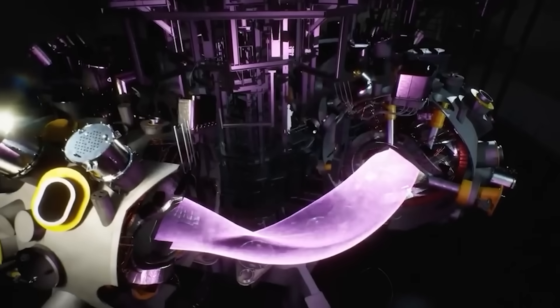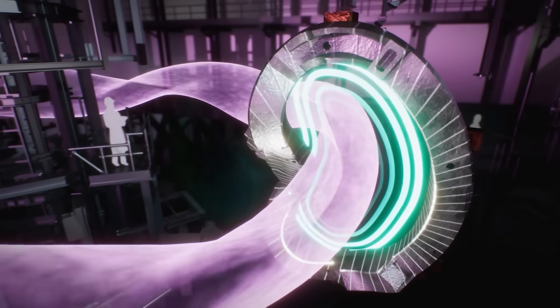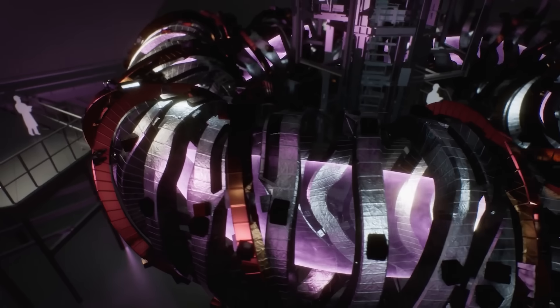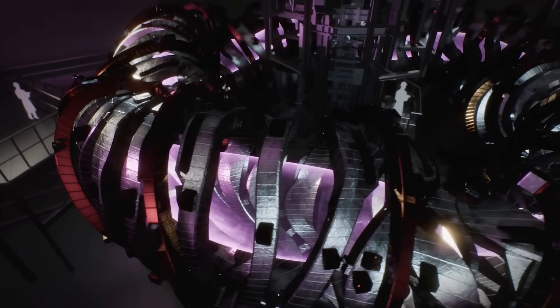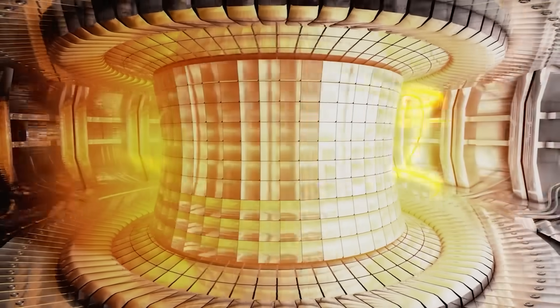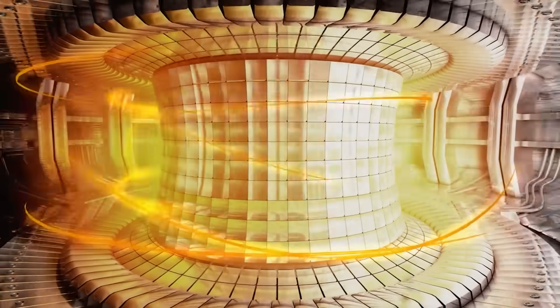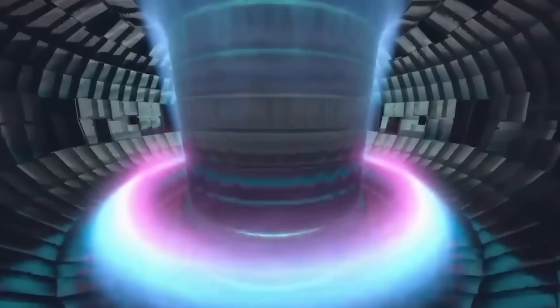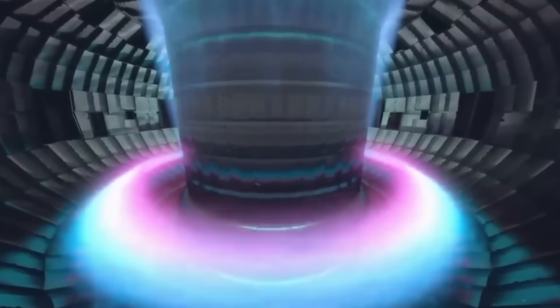It writhes, it forms waves, and it finds the smallest weakness in your magnetic trap. You cannot solve that with thicker metal, because any wall contact cools the plasma instantly and ends the reaction. So, fusion scientists try to float plasma inside magnetic fields, like an invisible bottle.